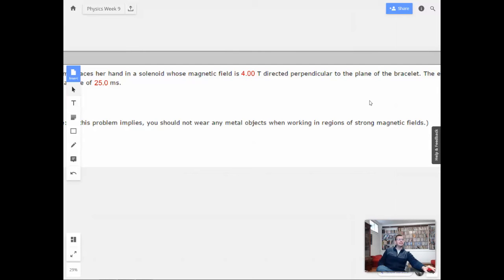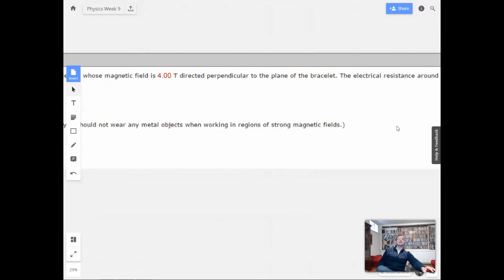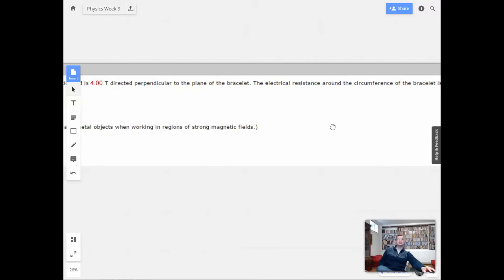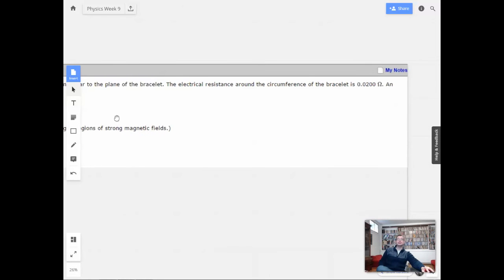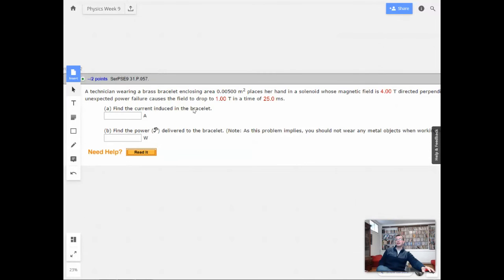I don't know. Cat scanned? Never mind, not important. Directed perpendicular to the plane of the bracelet. The electrical resistance around the circumference of the bracelet is 0.02 ohms. An unexpected power failure causes the field to drop to one Tesla in a time of 25 milliseconds.